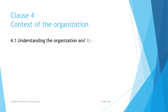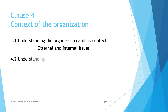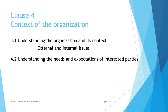You have to start by understanding your organization and its context — its external and internal issues that are relevant to environmental management, either because the organization's activities will have an effect on the environment, or the environment can impact on the organization. Then you have to determine who the interested parties are, such as regulators, neighbors, and employees, and gain a general high-level understanding of the needs and expectations that they have expressed which are relevant to the organization's environmental management.